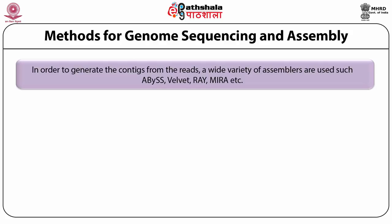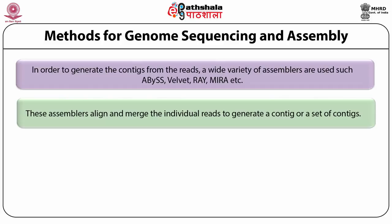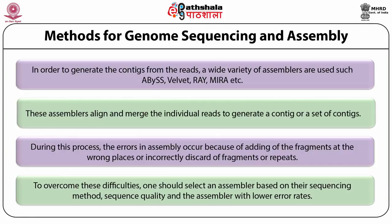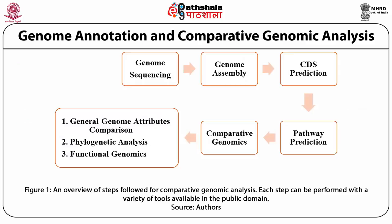In order to generate contigs from the reads, a wide variety of assemblers are used such as Abyss, Velvet, Ray, and Mirror. These assemblers align and merge the individual reads to generate a contig or a set of contigs. During this process, errors in assembly occur because of adding fragments at wrong places, incorrectly discarding fragments, or repeats. To overcome these difficulties, one should select an assembler based on their sequencing method, sequence quality, and the assembler with lower error rates.